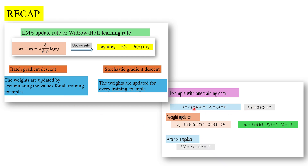In the previous video we had seen the example with one training data point — just one value of x and y — with initial weights w0=3 and w1=2, and learning rate 0.1. We computed h(x) and got the weight updated: w0 becomes 2.9 and w1 becomes 1.8. So after one update, that was the scenario we discussed previously.